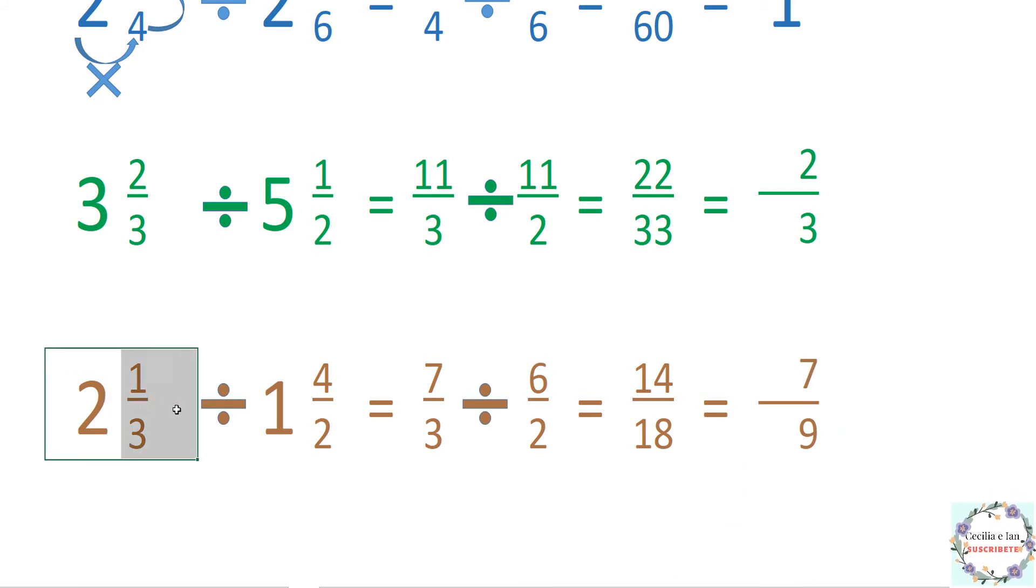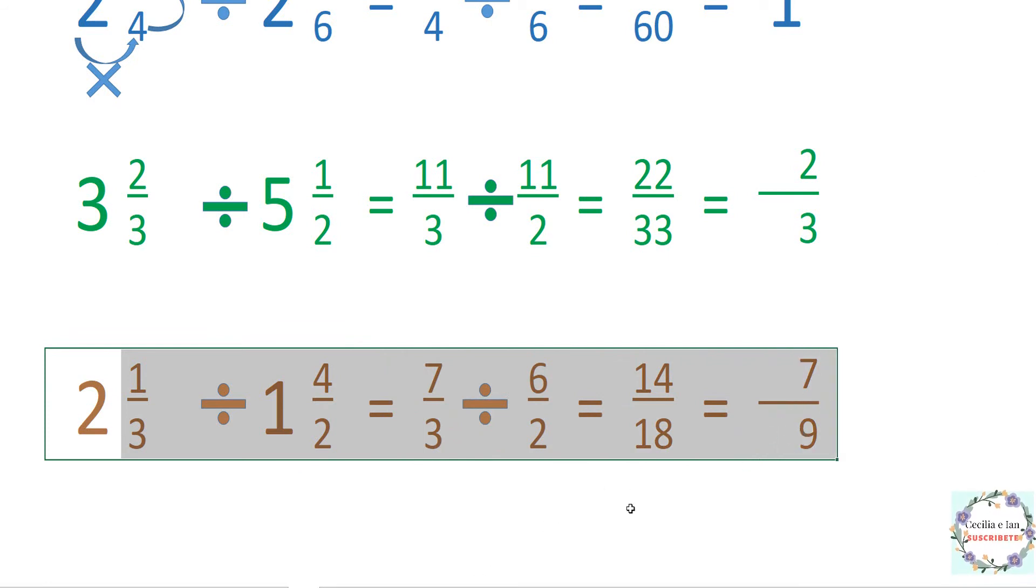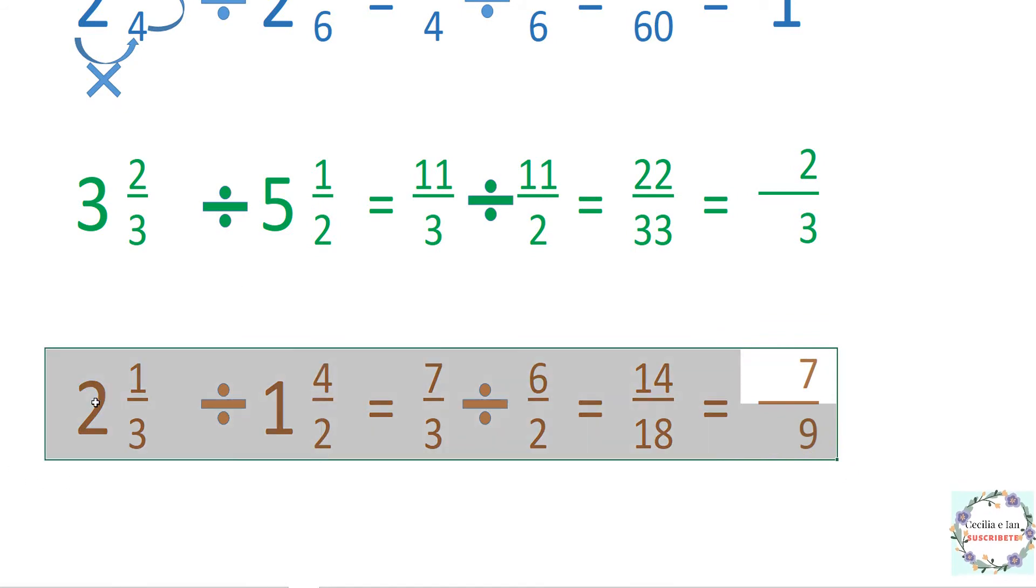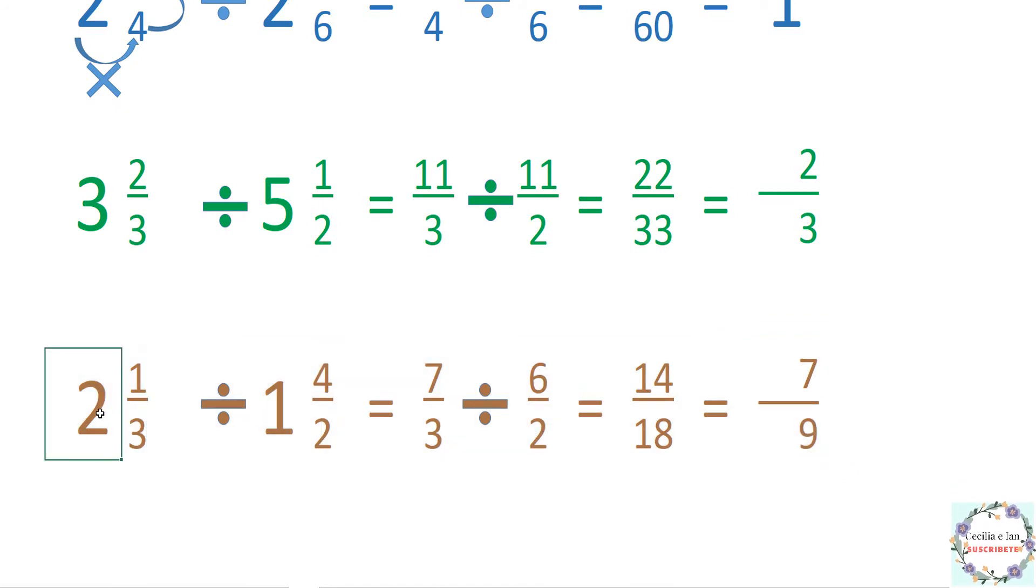2 enteros 1 tercio entre 1 entero y 4 medios, nuestro resultado final son 7 novenos. Aquí a lo mejor tú dices, oye, pero por qué el número de arriba es menor al número de abajo, si aquí estás dividiendo 2 enteros 1 tercio entre 1 entero y 4 medios. Bueno, es que realmente aquí las apariencias engañan.